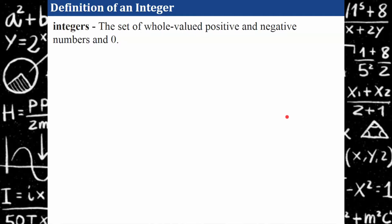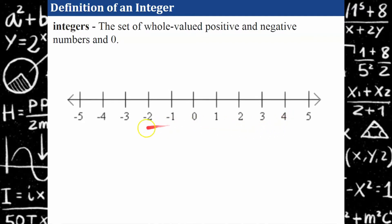Basically you're counting numbers and all of their opposites. So 1, 2, 3, 4 and so on, then 0, and going left on your number line with negative values: negative 1, negative 2, negative 3. Here's a number line. Notice that it starts at negative 5, with an arrow showing you that it goes on infinitely in the left direction, more negative, 0, and then positive infinitely to the right. All of these values on this number line are integers.